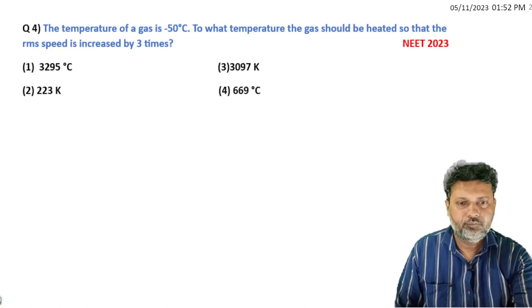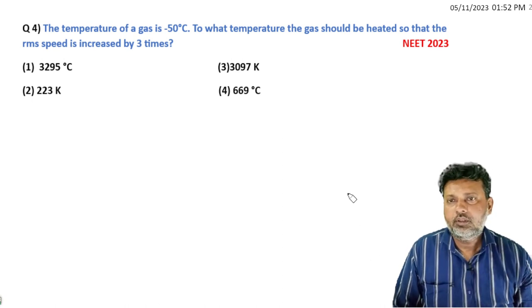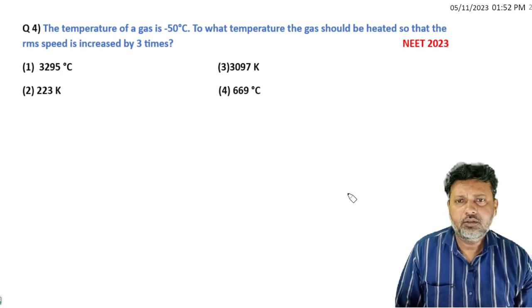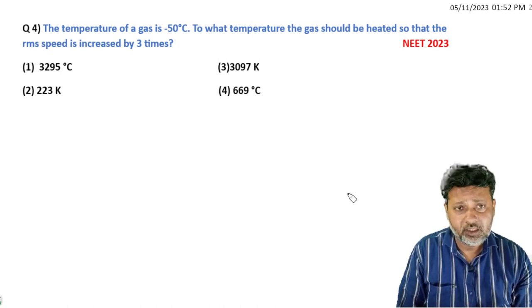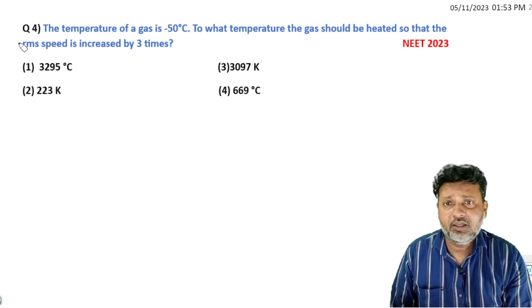Next question. Read the question. The temperature of a gas is -50 degrees Celsius. To what temperature the gas should be heated so that the RMS speed is increased by 3 times?